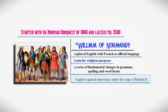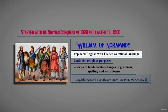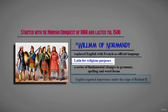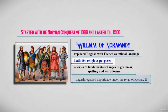The Normans were French-speaking people and they replaced English with French as an official language. The people living in England used Latin for religious purposes, French for official purposes, and the English language remained as a spoken language, breaking into many dialects.